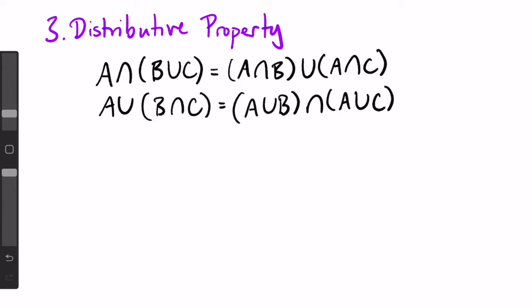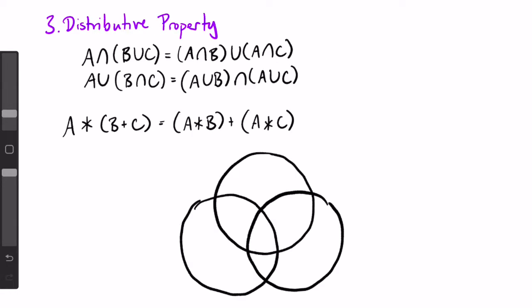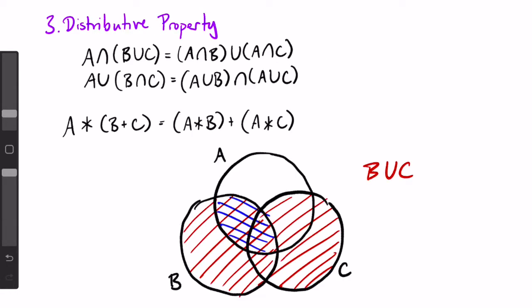You can think of the operation outside the parentheses as a multiplication symbol and the operation inside the parentheses as an addition symbol. A times (B plus C) equals (A times B) plus (A times C). We can quickly show this is true using a Venn diagram. B union C is this area and A intersect (B union C) is this part. That's the same as (A intersect B) union (A intersect C).